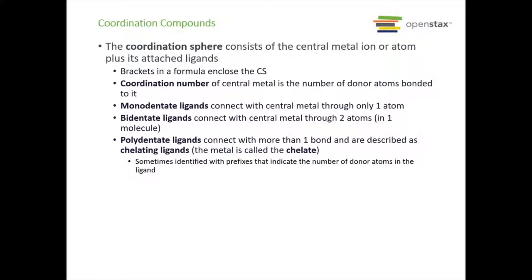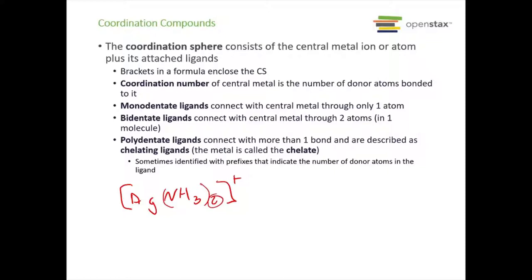Let's go over some terms. The coordination sphere is the metal ion or atom plus its attached ligands — you put brackets around it to denote the coordination sphere. The coordination number of the central metal is the number of donor atoms bonded to it. For instance, for the silver ion [Ag(NH3)2]+, the coordination number for silver is 2, because you have two ammonias bonded to it.